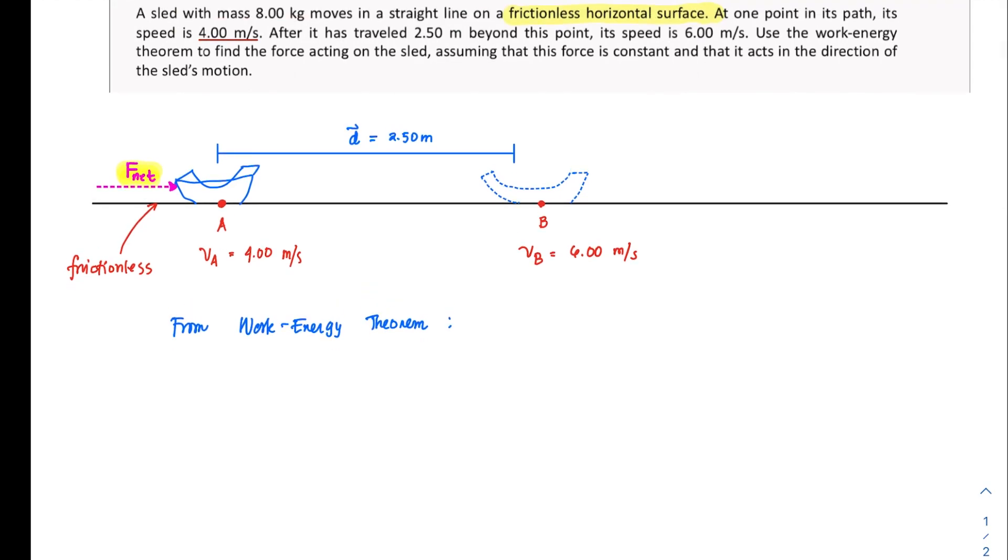But from the work energy theorem, you just have to remember that the work net or the total work done, take note, it's the total work, not just any work, is equal to the change in the object's kinetic energy. In this case, this is just like saying that the total work done on my sled A is the cause or causes my sled to move or to change its velocity from 4 meters to 6 meters.